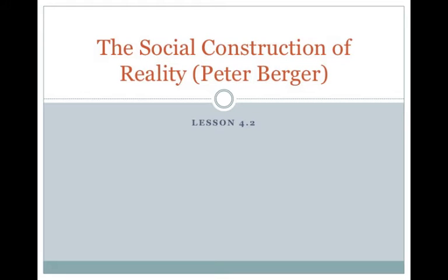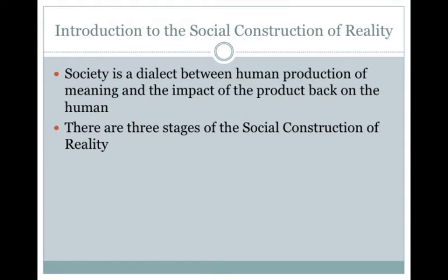For Peter Berger, you're not born a social person — you have to learn through different dynamics and influences how to be social. Society is a constant dialectic or interaction between how people produce meaning in the world and how that meaning is brought back onto the person. We're constantly integrated and reintegrated into society, which you can see through social changes such as gender changes or economic changes that redefine society.